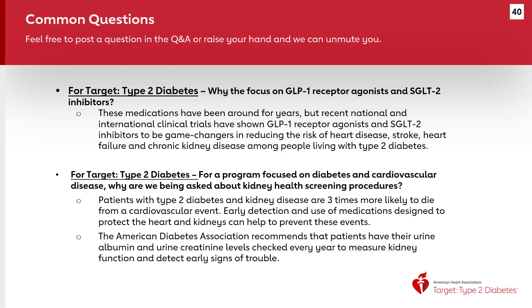Why are we asking about kidney health screening procedures when we're focused on diabetes and cardiovascular disease? Patients with type 2 diabetes and kidney disease are three times more likely to die from a cardiovascular event. Early detection and use of medications designed to protect the heart and kidneys can help prevent these events. We want to see how organizations are performing on these screenings annually. There is also a new kidney health screening guide on the Target Type 2 Diabetes website.